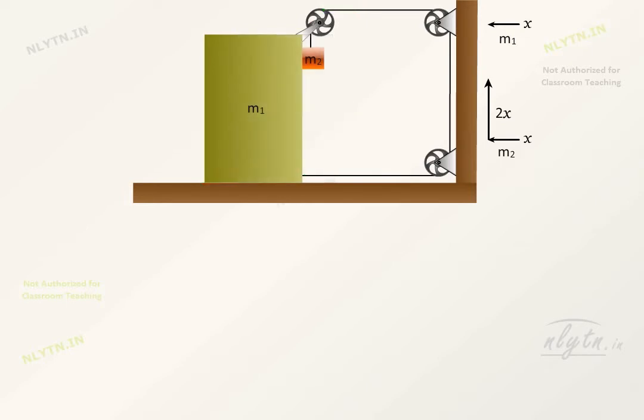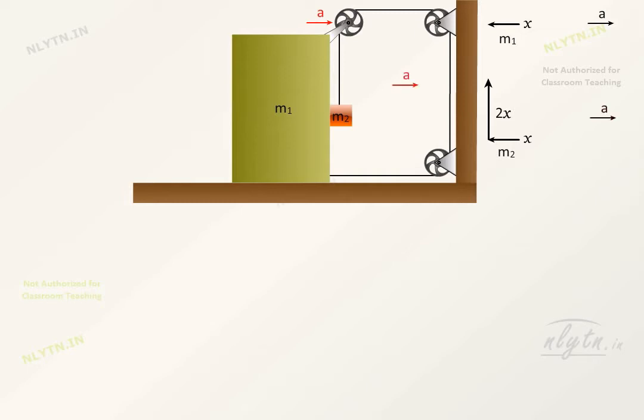Looking at the situation, we can say that the movement of system will be like this. So, if m1 has acceleration a towards right, m2 will have an acceleration a towards right and 2a downwards.